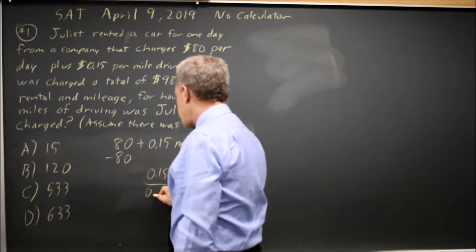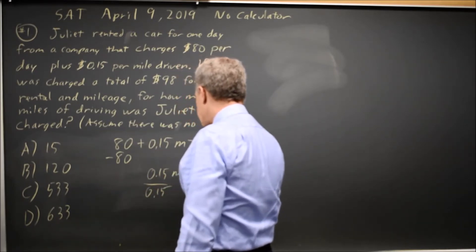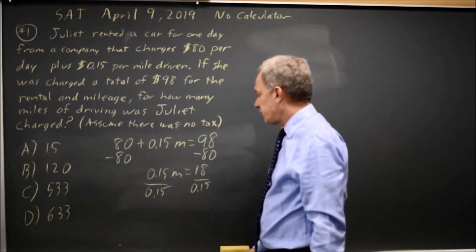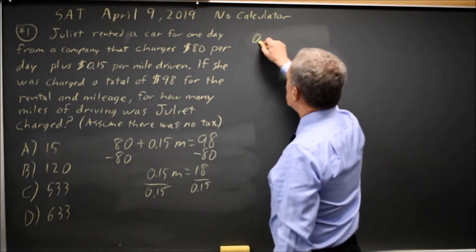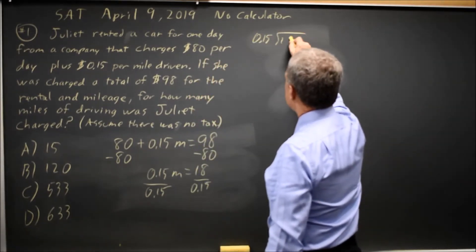Divide both sides by 0.15 because m is multiplied by 0.15, so if you divide, you get m by itself. And 0.15 into 18,